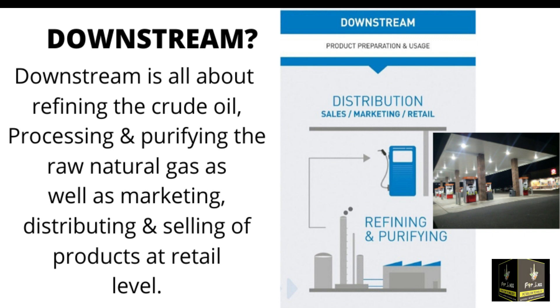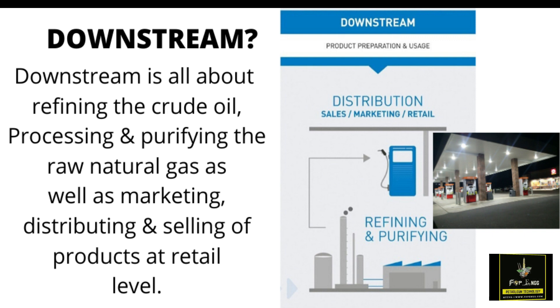The refinery is under the category of downstream. They are responsible for purifying and processing the crude oil and raw natural gas, and also responsible for marketing, distributing, and selling the products and by-products towards petrol pumps and gas distribution companies.